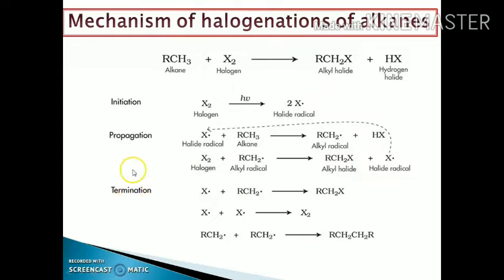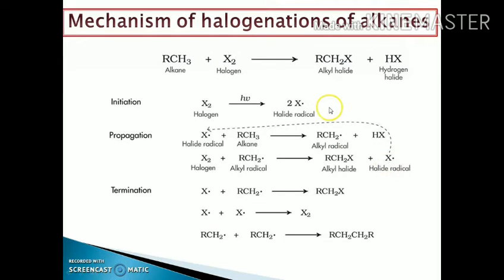The third step is termination, where complete products are formed. At the termination point, new radicals combine with each other to give the desired product and a mixture of other products. If X radicals combine with alkyl radicals, the major product forms; if X radicals combine with X radicals, dihalogen forms; and if alkyl radicals combine with alkyl radicals, there is a possibility of formation of higher alkanes.